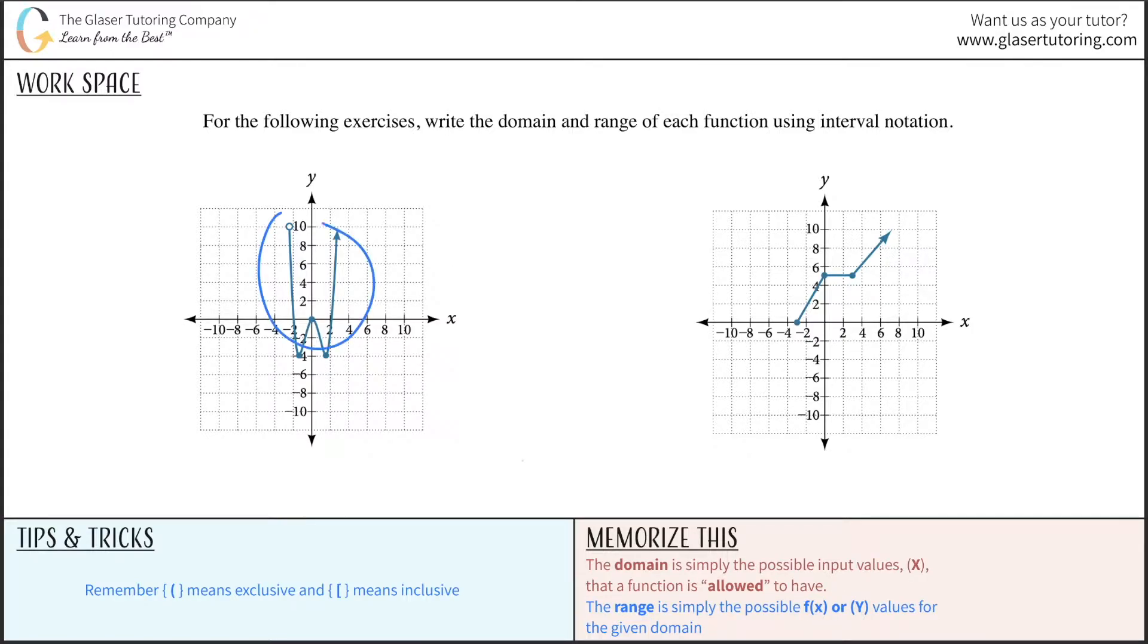So when we look at this first graph, what I want to do is I want to first work with the domain. You could work with the range, it doesn't matter. But I'm going to work with the domain. Basically, I'm looking for the leftmost point and the rightmost point. So in terms of the leftmost point of this graph, it looks like it's going to happen right about here.